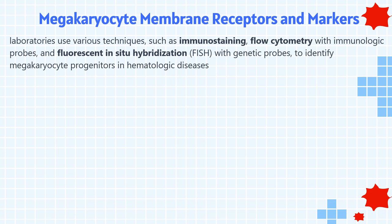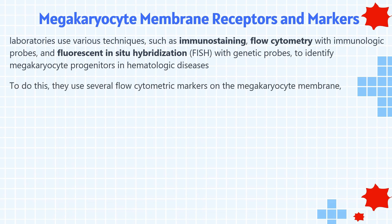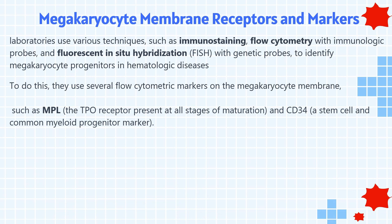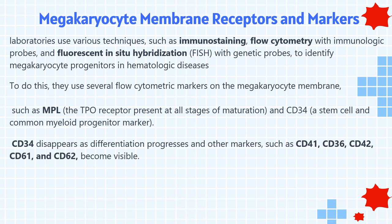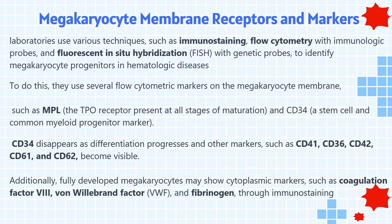Scientists and technicians in specialty and tertiary care laboratories use various techniques, such as immunostaining, flow cytometry with immunologic probes, and fluorescent in-situ hybridization (FISH) with genetic probes, to identify megakaryocyte progenitors in hematologic diseases. They use several flow cytometric markers on the megakaryocyte membrane, such as MPL (the thrombopoietin receptor, present at all stages of maturation) and CD34 (a stem cell/common myeloid progenitor marker). CD34 disappears as differentiation progresses; other markers such as CD41, CD36, CD42, CD61, and CD62 become visible. Additionally, fully developed megakaryocytes may show cytoplasmic markers such as coagulation factor VIII, von Willebrand factor, and fibrinogen through immunostaining.